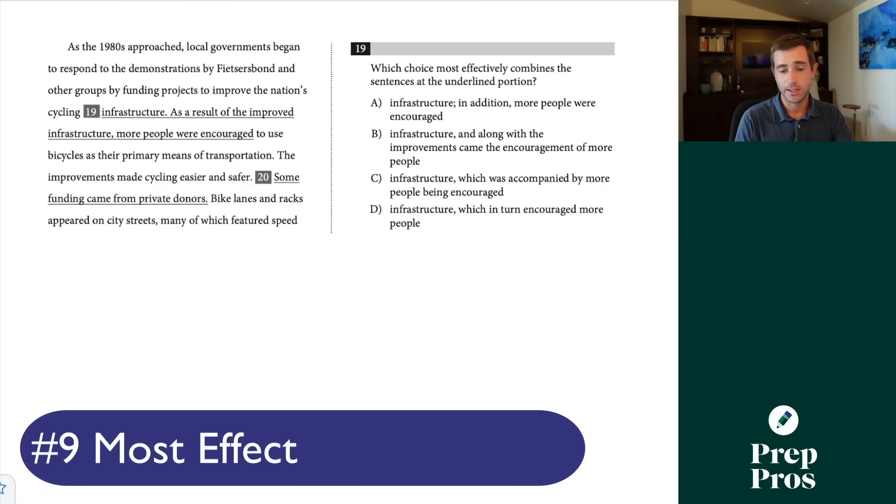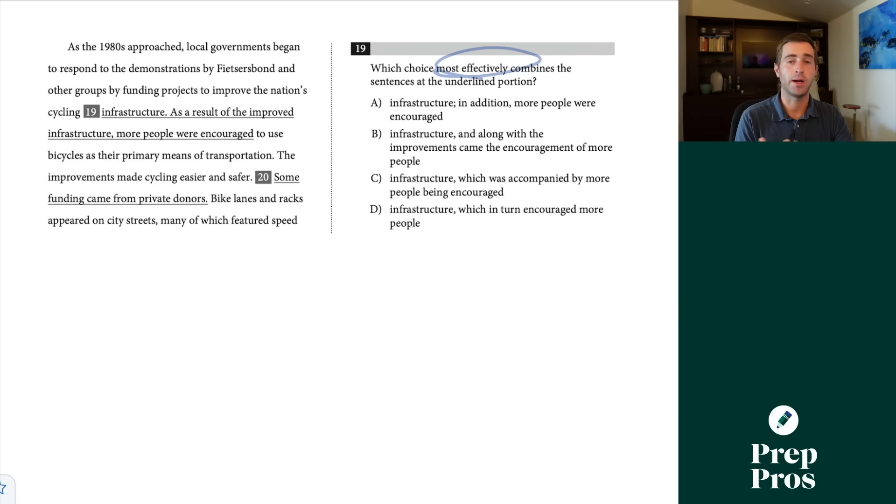The next thing you're definitely going to see on your SAT, most likely three to four of these, are most effectively combined questions in the writing and language section. There's four really simple things you want to think about. Number one, do not pick the answer choice with the semicolon. In over 80 SATs, I have never seen it be correct. Number two, generally speaking, shorter answer choices are better here. We really want to watch out for repetitiveness. Number three, it needs to be grammatically correct. Some sentence structure rules, all the way up to really advanced stuff like misplaced modifiers, can apply to these questions. And fourth, we don't want to change the meaning of the original sentence.